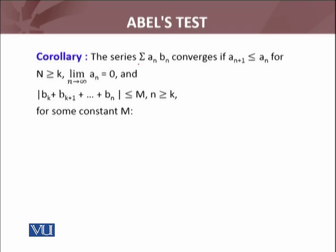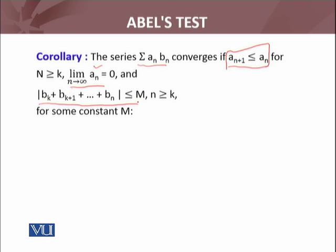The series summation A_n B_n, series usi tarah ki hai jo ke humne Dirichlet test mein consider ki thi. It converges if A_{n+1} is less than or equal to A_n — this condition is new — for capital N greater than or equal to K. And limit as n approaches infinity of A_n equals 0, yeh Dirichlet test mein thi. The new condition in Abel's test replaces the condition that the series of |A_{n+1} - A_n| is convergent.